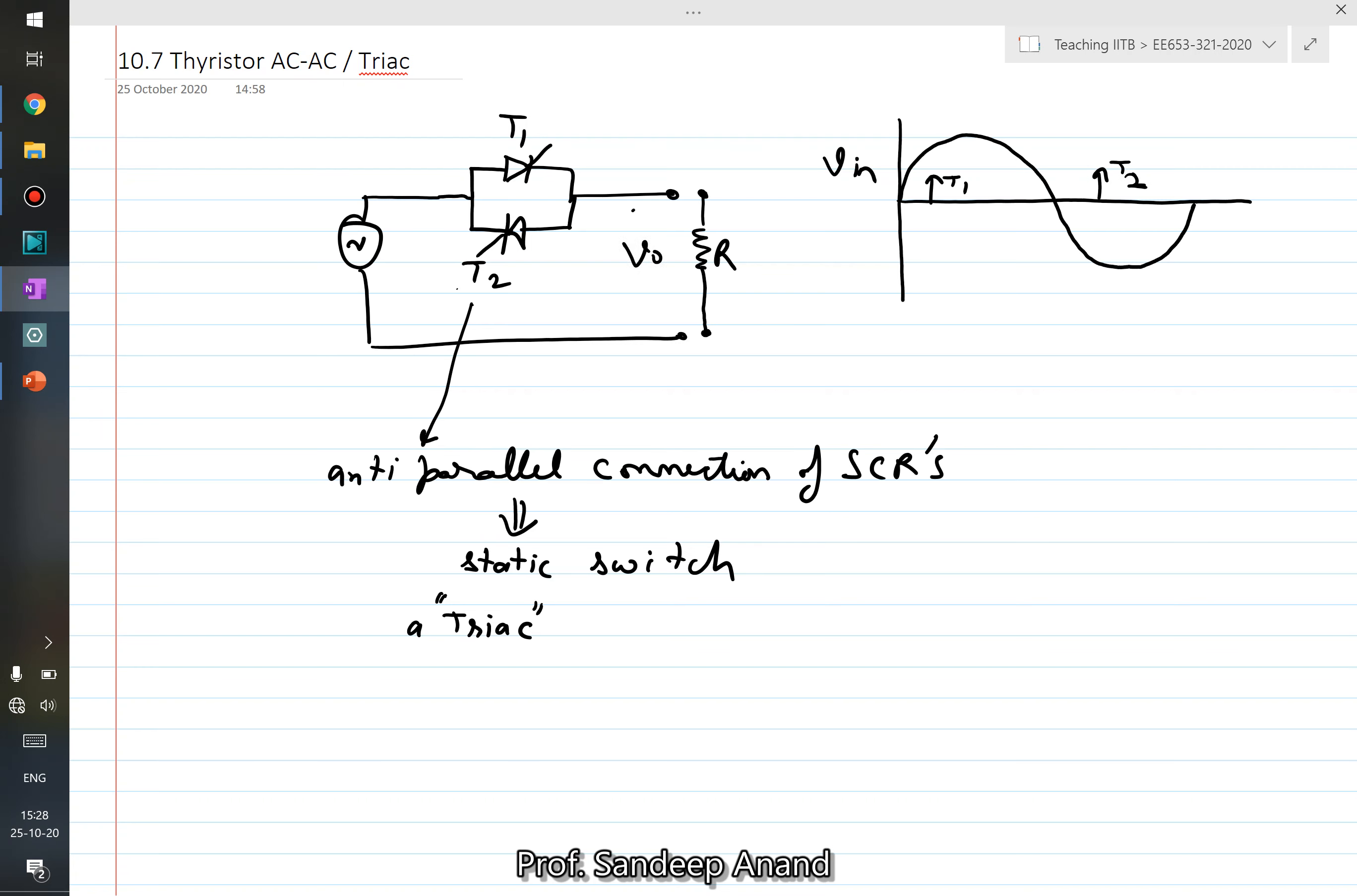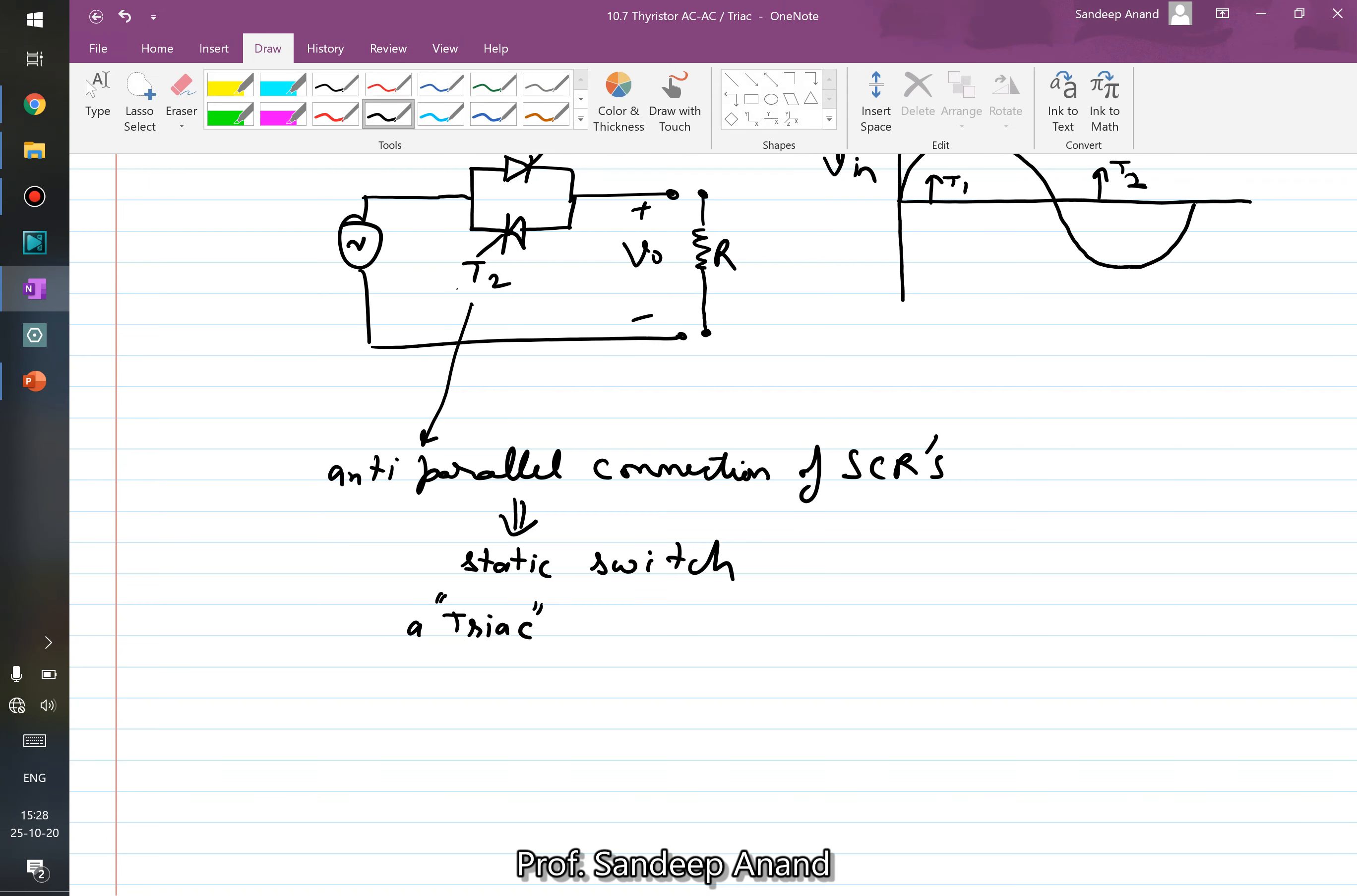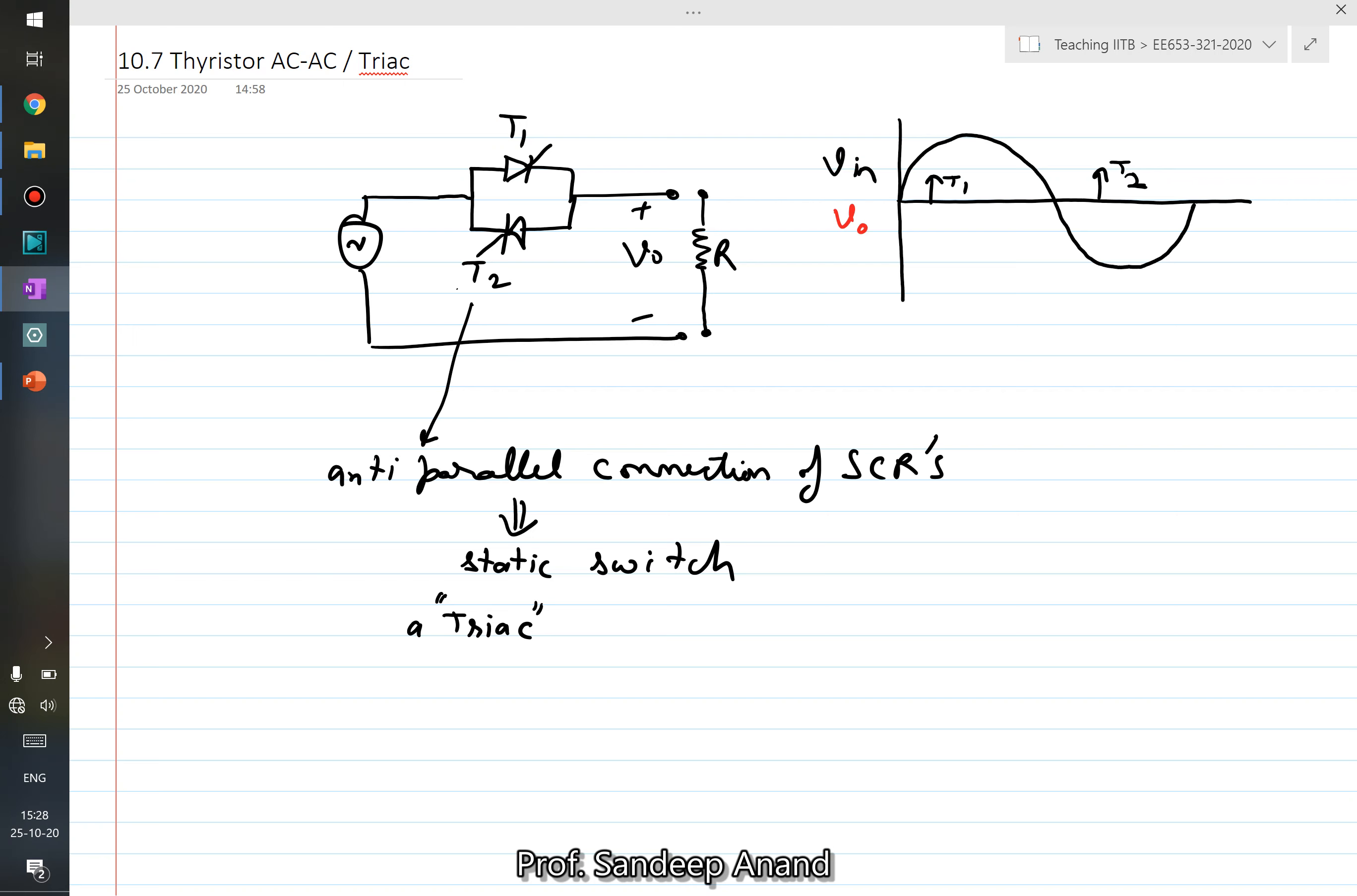What would be the output voltage? The output voltage when I give a trigger pulse to T1, input is positive and therefore the output voltage starts following the input voltage. Now when zero comes, because there is a resistance, the current becomes zero and therefore T1 turns off and the voltage remains zero at the output.